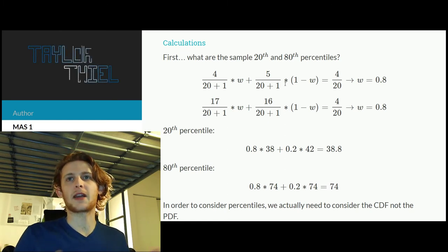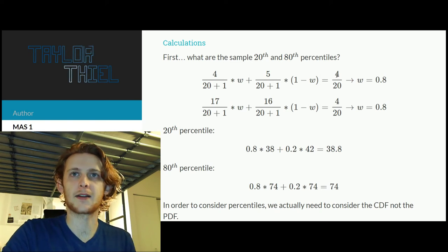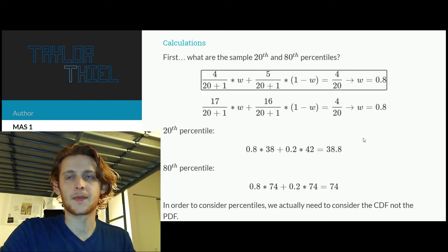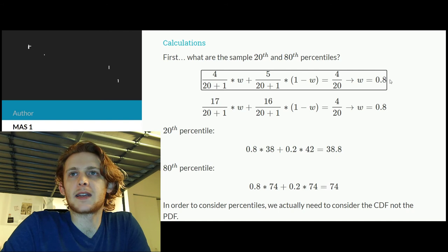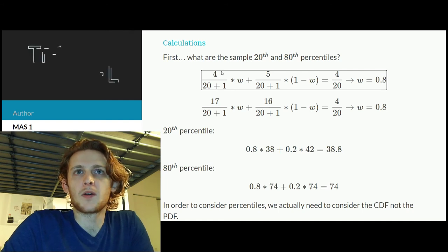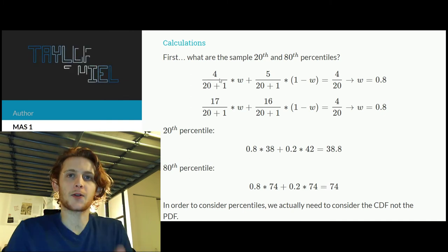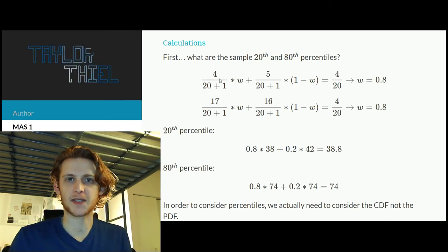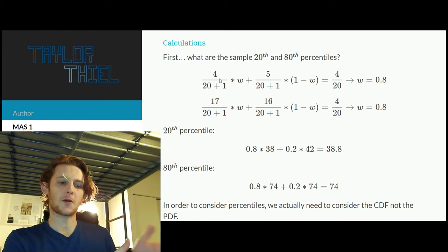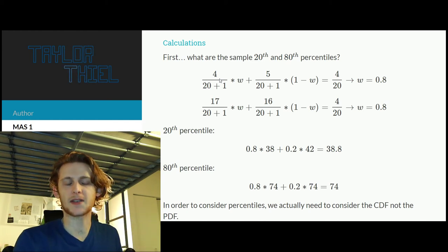And that means the 4th observation is the 4 over 21st percentile, and then the 5th is the 5 over 21st percentile. And so what weights do we assign those such that their weighted average results in the desired 20th percentile? And so when we solve for that, we get 80 percent.